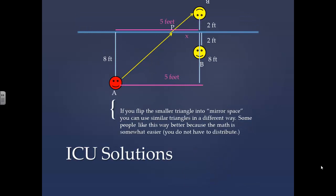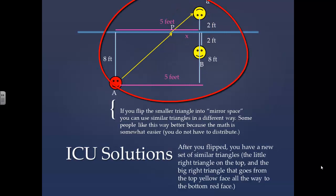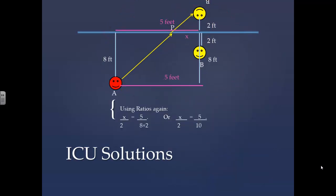If you flip the smaller triangle into mirror space, you can use similar triangles in a different way. Some people like this way better because the math is somewhat easier. You don't have to distribute. After you've flipped, you have a new set of similar triangles. The little right triangle on the top and the big right triangle that goes from the top yellow face all the way down to the bottom red face. Using ratios again, we have x is to 2 as 5 is to 8 plus 2 or x is to 2 equals 5 is to 10.